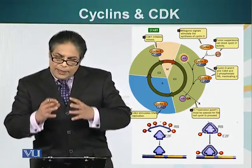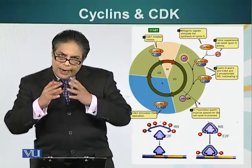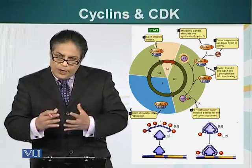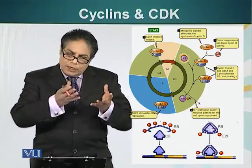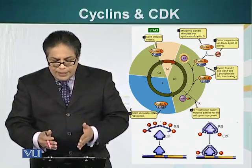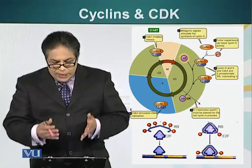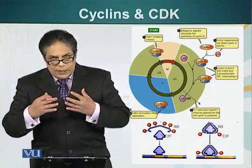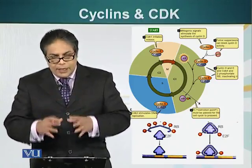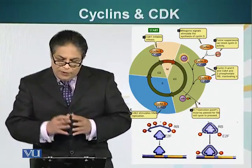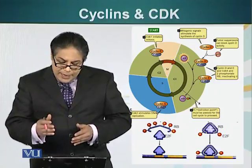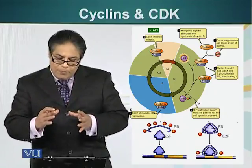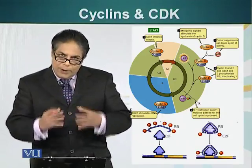Once the RB protein is phosphorylated by the now-active CDKs associated with cyclins, it can no longer hold an essential protein called E2F, which is required for production of the machinery that results in DNA replication. Similarly, cyclin A interacts with CDK2 during S phase and causes the production of materials that keep cells in S phase. Cyclin B and CDK1 interact at the junction of G2 and M phase, preparing cells for mitosis.